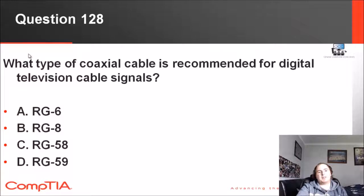128: What type of coaxial cable is recommended for digital television cable signals? RG6, RG8, 58, and 59. The normal television signal—RG, not RJ—RG6 and 59. RG59 is for analog, so that means RG6 is digital.